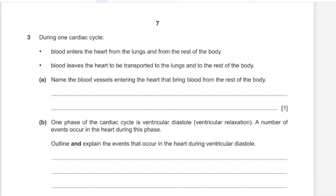During one cardiac cycle, blood enters the heart from the lungs and from the rest of the body through veins, and leaves to be transported to the lungs and the rest of the body through arteries. The blood vessels entering the heart that bring blood from the rest of the body are the superior vena cava (from upper regions) and inferior vena cava (from lower regions).